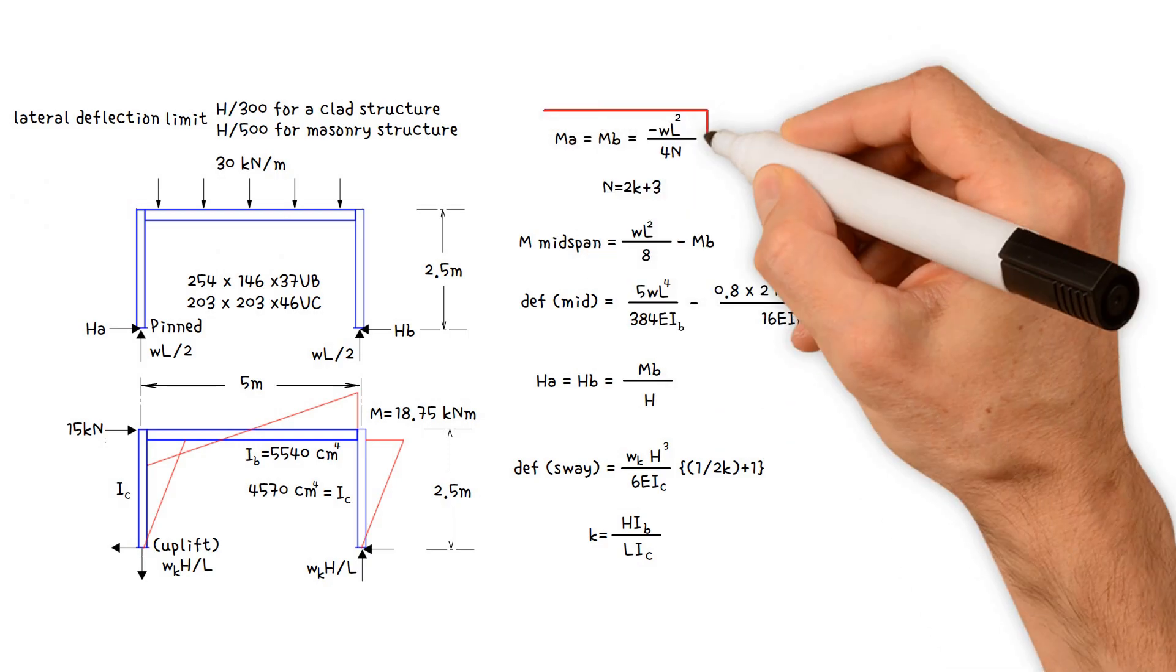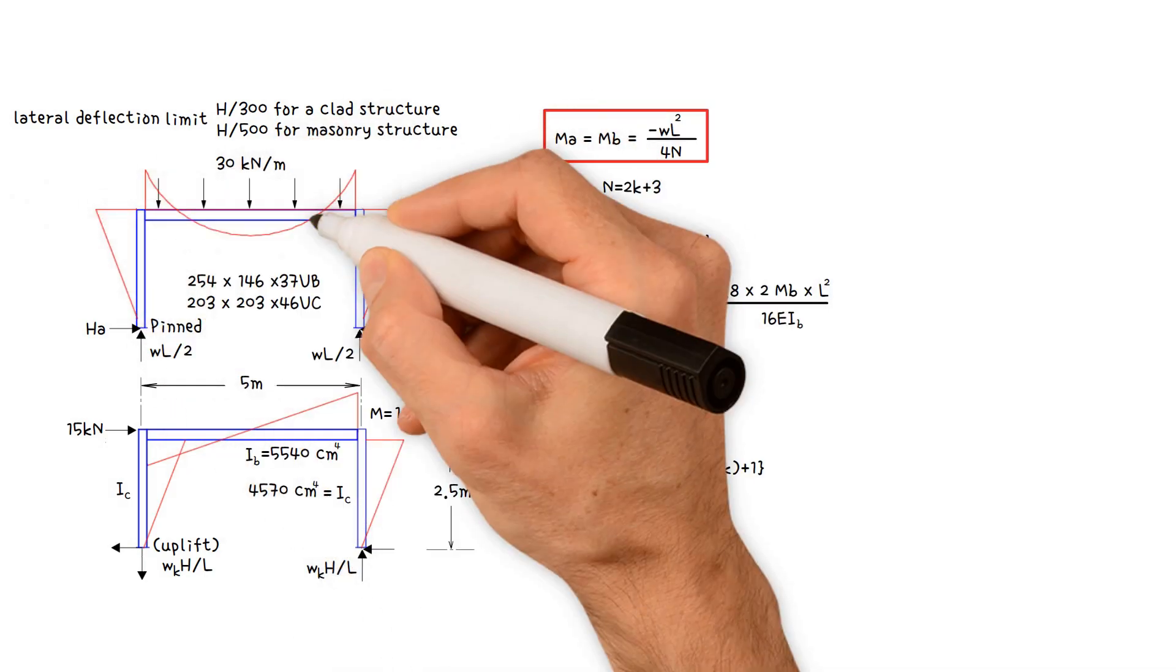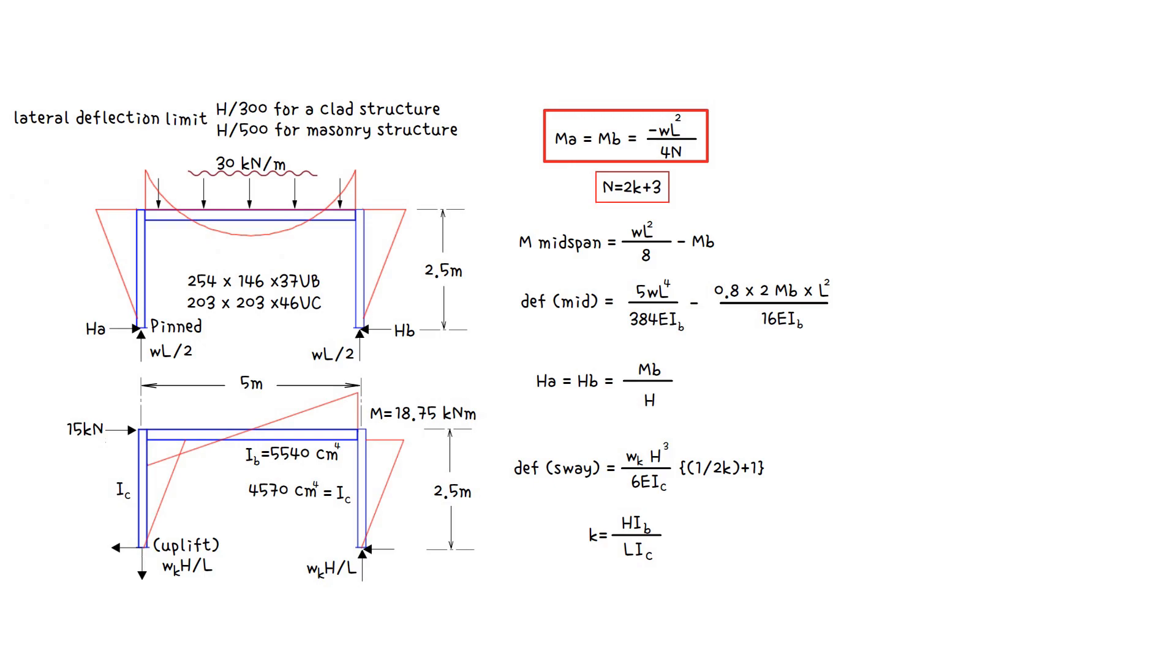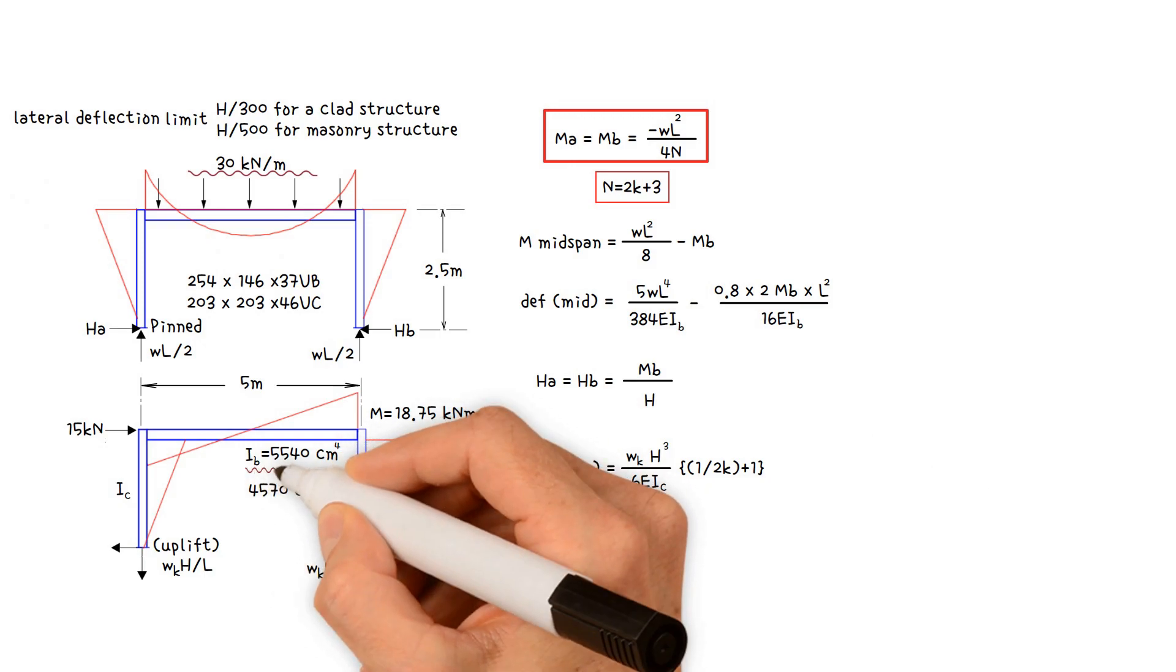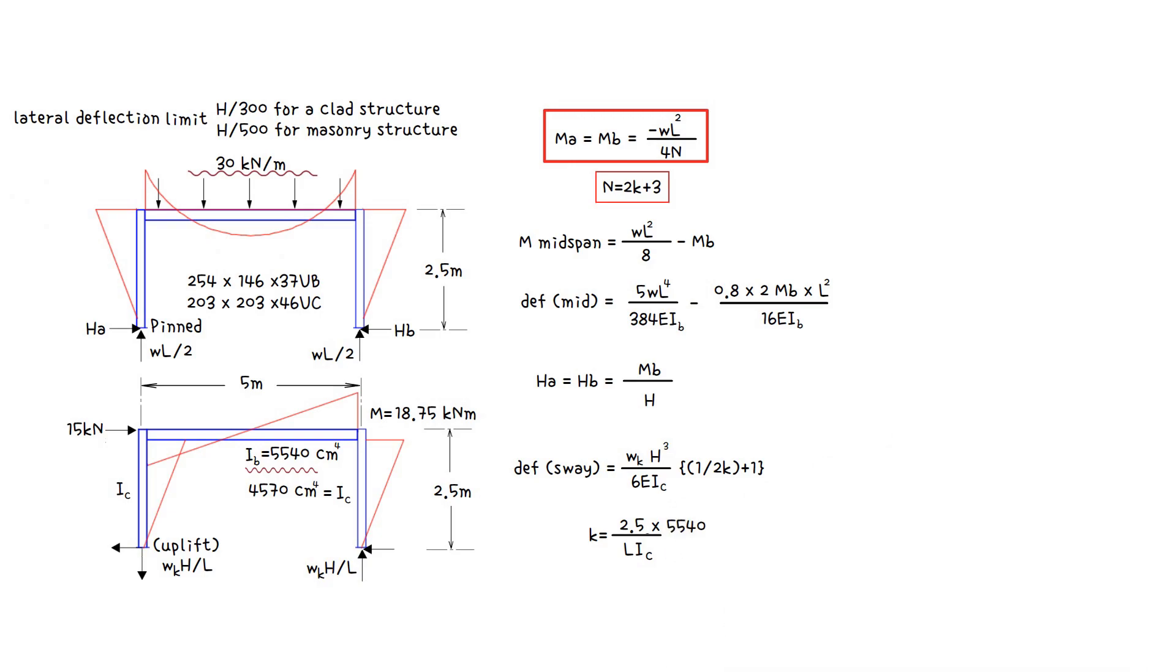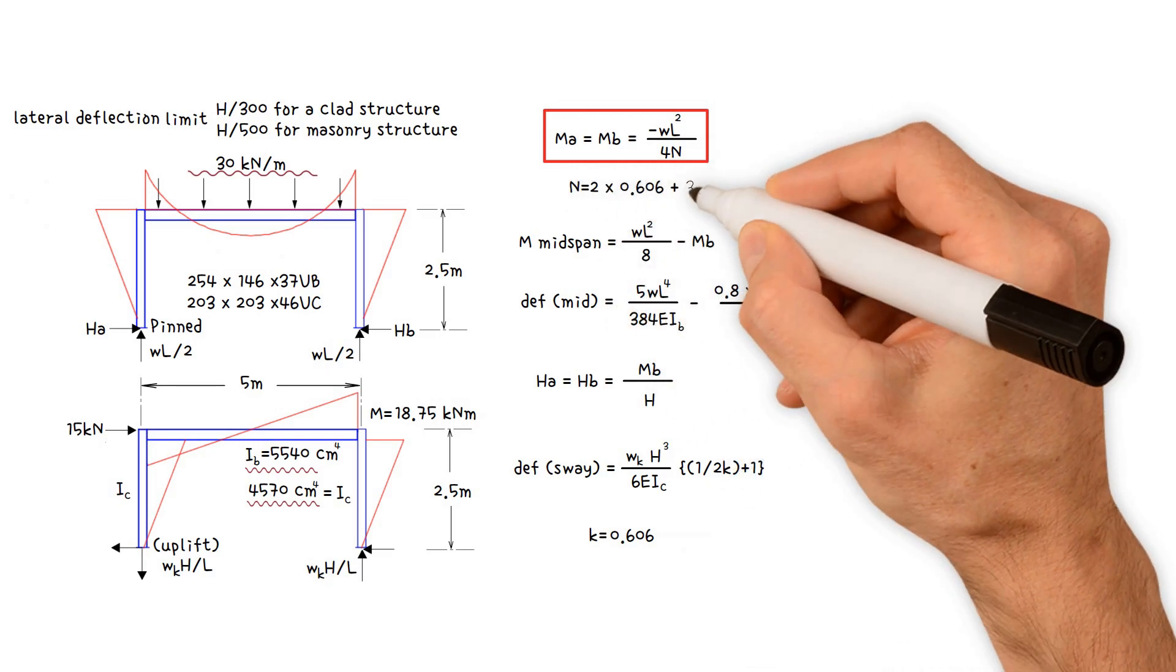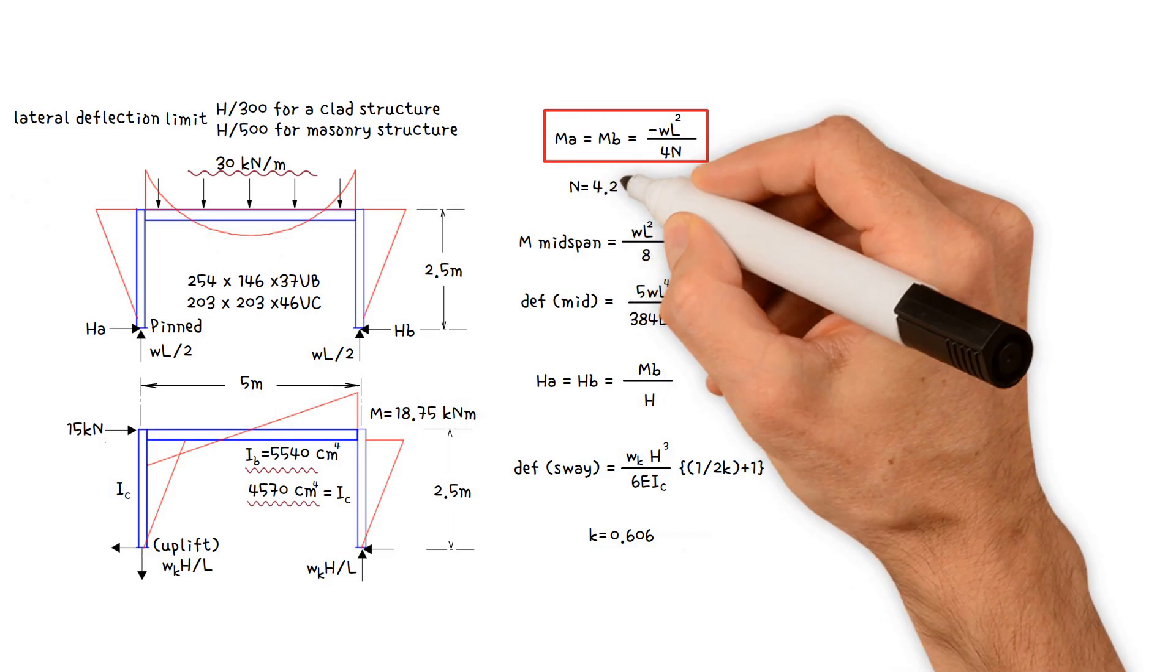Next, using this formula calculate the bending moments in the beam from the uniform distributed load of 30 kilonewtons per meter. First, we must determine these constants k and n. Constant k equals post height 2.5 meters times beam moment of inertia 5540 divided by the span 5 meters times column moment of inertia 4570. This gives us a constant k value of 0.606. As a result, constant n equals 2 times 0.606 plus 3. This gives us a value of 4.212.